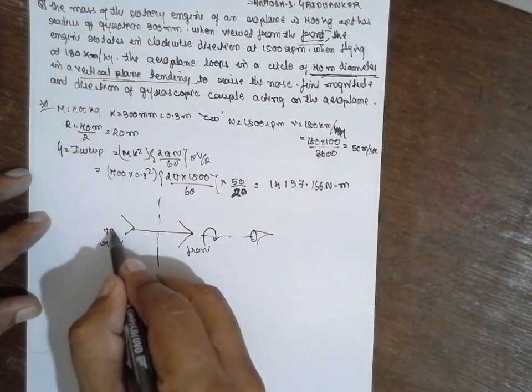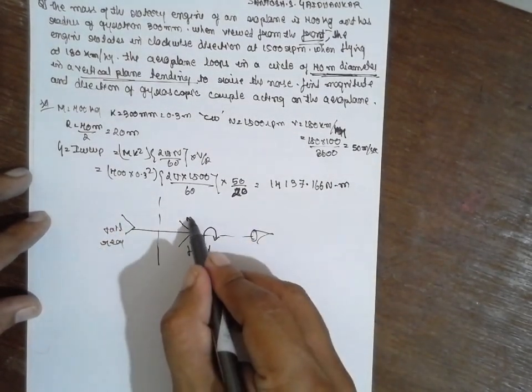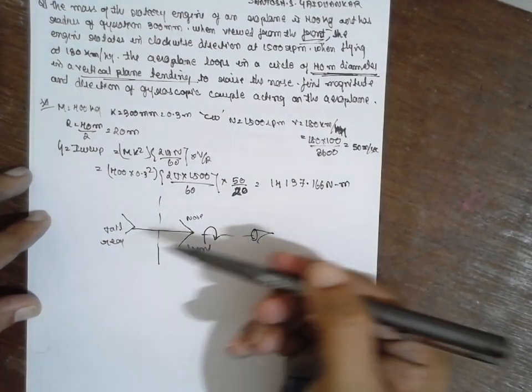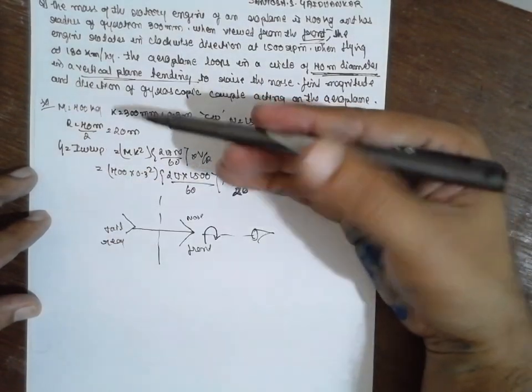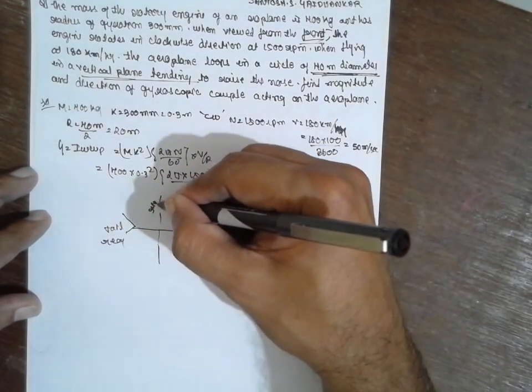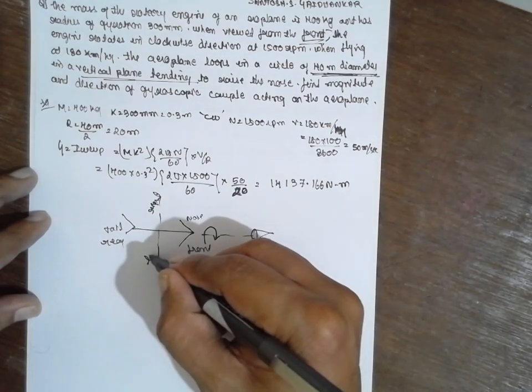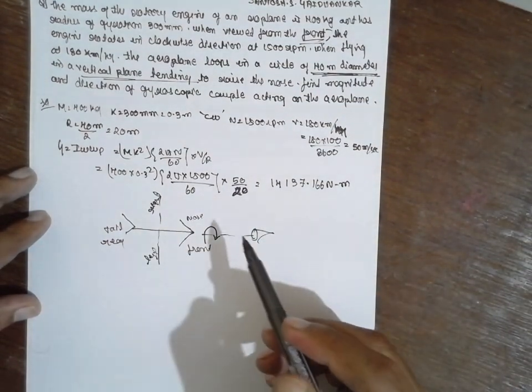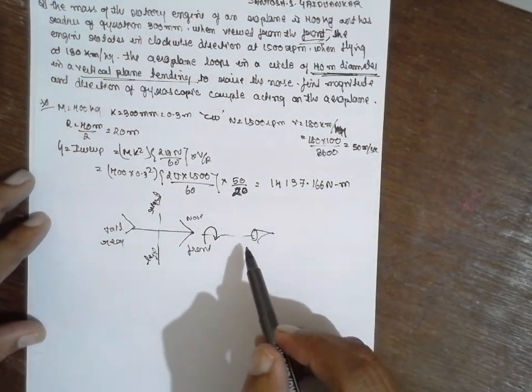This is the tail. This is the nose. Now if I am viewing from this direction. This is my right hand. This becomes right. And this becomes left. This becomes left.